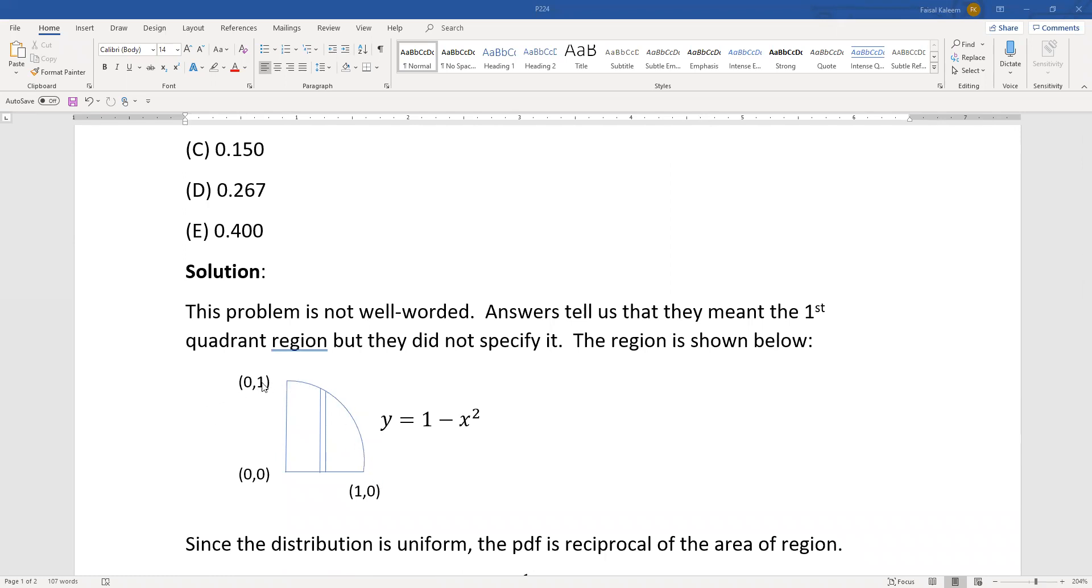If you have to bound them by the x-axis and the y-axis, x-axis is this, y-axis is this, and this is the part of y equals 1 minus x squared that's in the first quadrant. So then you get this region.